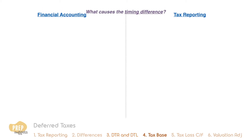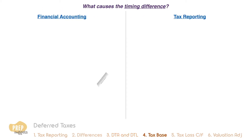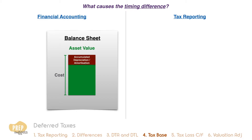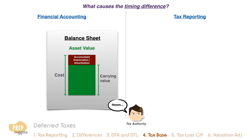The carrying value of an asset is the value of the asset reported in the balance sheet, net of accumulated depreciation and amortisation. That is the accounting side of the story. The taxman, however, may not thoroughly agree with the accountant.